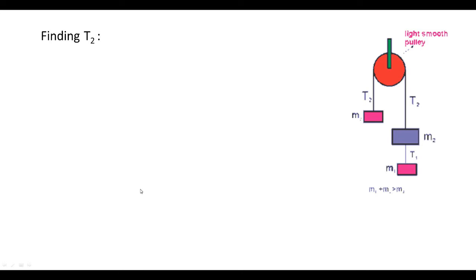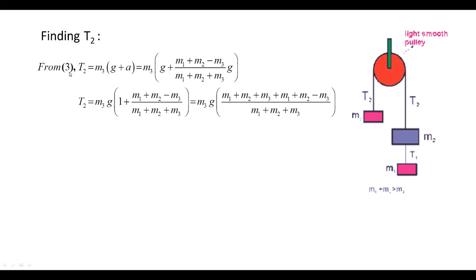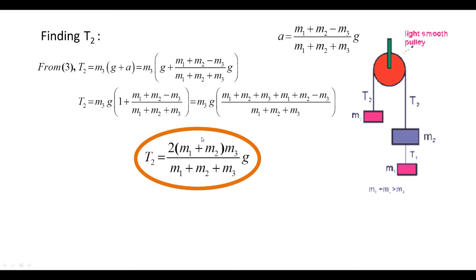For T2 from equation three: T2 equals m3·(g plus a). Substituting a, we get T2 equals m3·g·[1 plus (m1 plus m2 minus m3)/(m1 plus m2 plus m3)]. Simplifying, the minus m3 and plus m3 terms cancel, leaving 2·(m1 plus m2) in the numerator. Therefore T2 equals 2·(m1 plus m2)·m3·g divided by (m1 plus m2 plus m3). We have now found acceleration, T1, and T2.